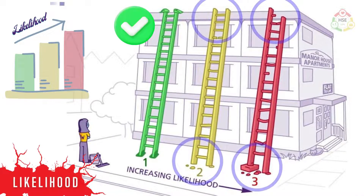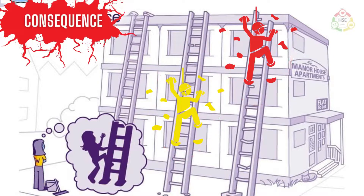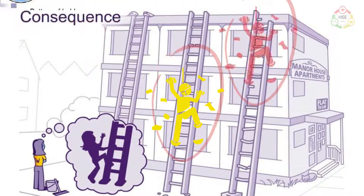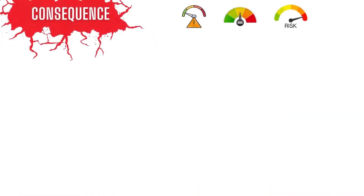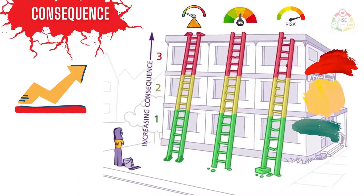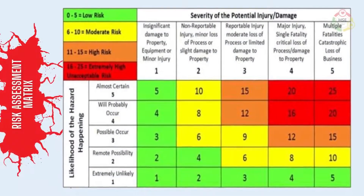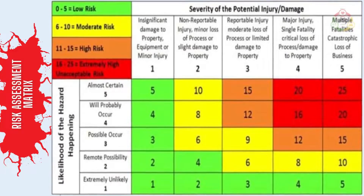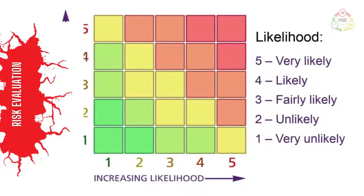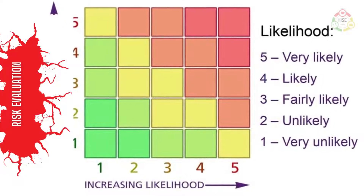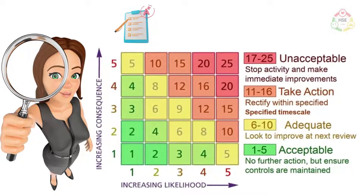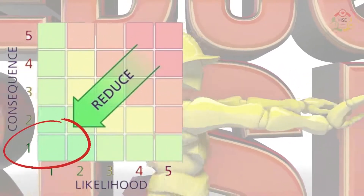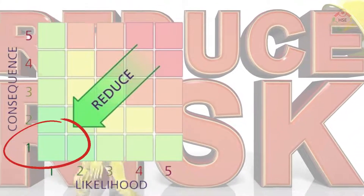Consequences of the event will increase as we go upward, as is very clear from the picture showing the red color risk assessment matrix. In the risk assessment matrix we calculate risk by combining likelihood and consequences. The likelihood chart clearly shows that for any event it increases from left to right, whereas for consequences it increases from bottom to top. Risk, which is the combination of likelihood and consequences, increases diagonally toward the upper right, with a nomenclature of 'unacceptable,' whereas at the bottom left it will be 'acceptable,' which is a low risk rating.